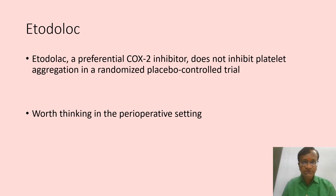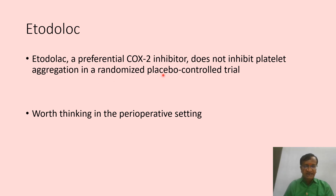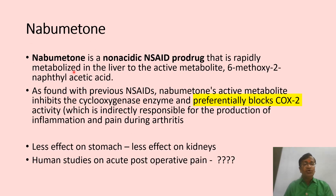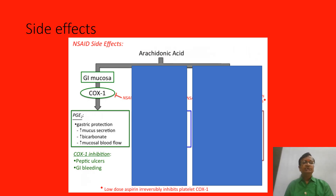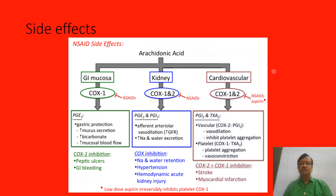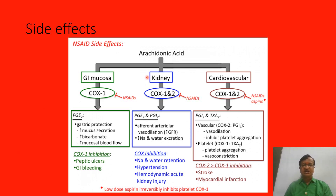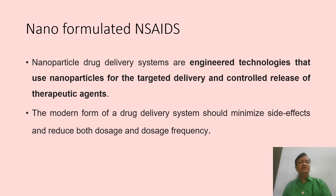Dexketoprofen is a preferential COX-2 inhibitor that does not inhibit platelet aggregation, making it worth considering in the perioperative setting. It is metabolized to naphthylacetic acid, which has less effect on the stomach and kidneys. It preferentially blocks COX-2. The reason COX inhibition causes side effects is that prostaglandins synthesized by COX-1 and COX-2 are physiologically beneficial in the kidneys, platelets, and gastric mucosa.